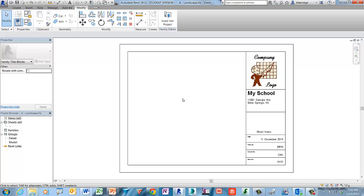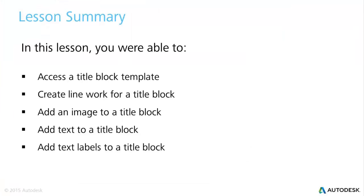This concludes this exercise. Let's review the learning objectives for this lesson. First, we accessed a title block template from the default library. Then we added line work to give it a margin. We added a raster image to give it identity. We added fixed text labels that are permanent and not meant to be changed. Finally, we added text labels which are dynamic text placeholders that display information held in the project properties or by the view or object properties.